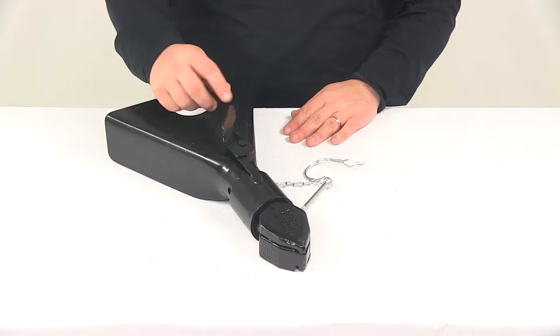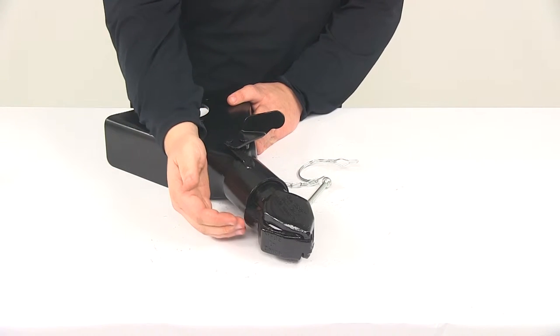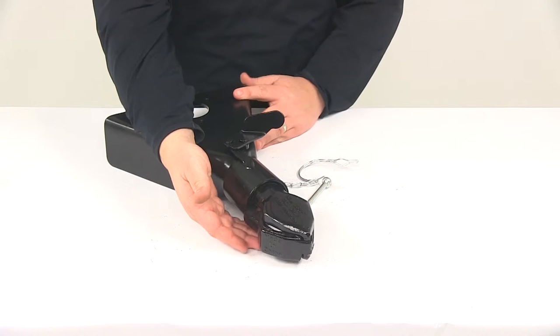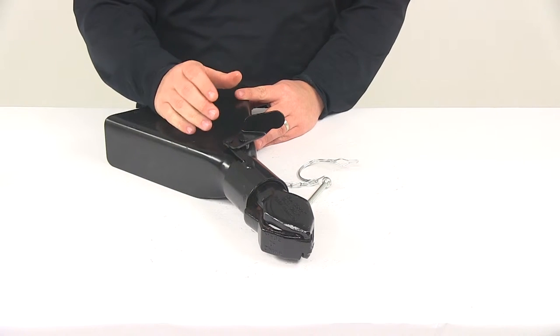And then what you would do is you would use this large lever here on top. You just push it, kicks the collar back, and then it shoots this out to the side which is going to open the unit to receive the 2-inch hitch ball on the trailer or on your vehicle.